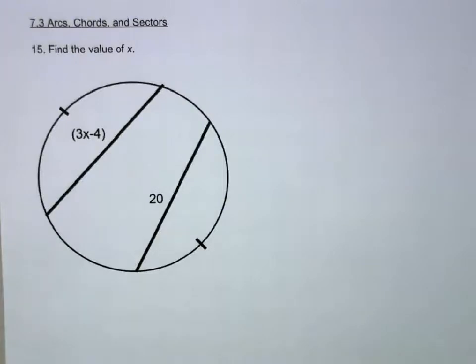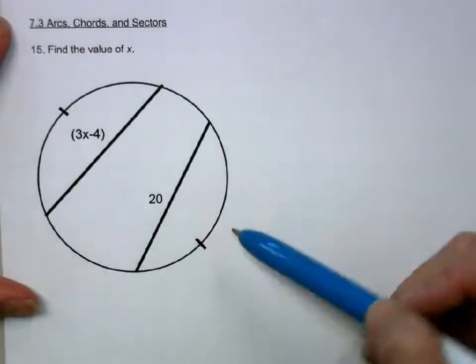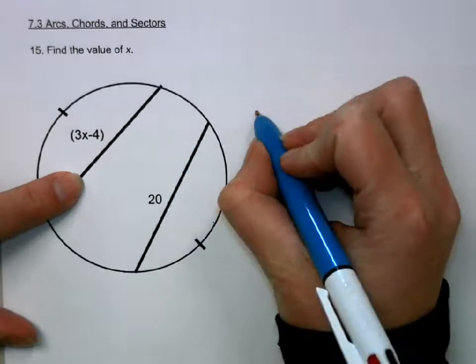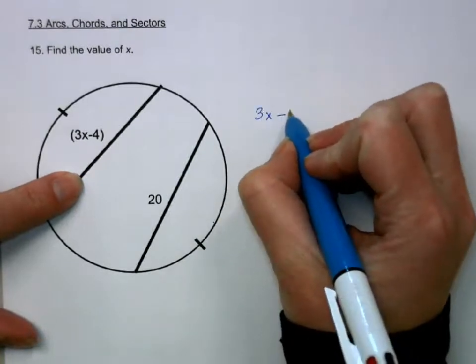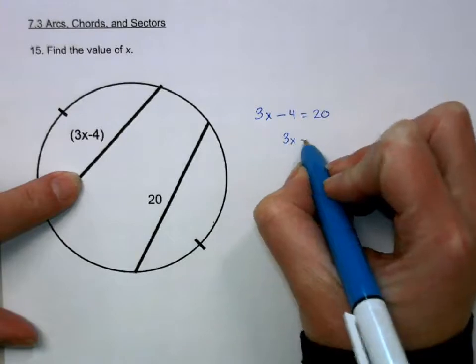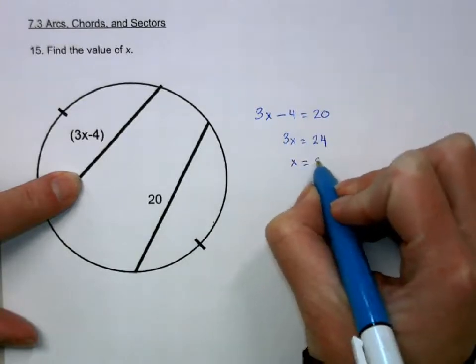In the next section, we talked about chords and the arcs associated with them. If the two arcs are the same, the two segments are the same. So to find X, I'm just going to set 3X minus 4 equal to 20, which means 3X equals 24. Divide by 3 to get an X value of 8.